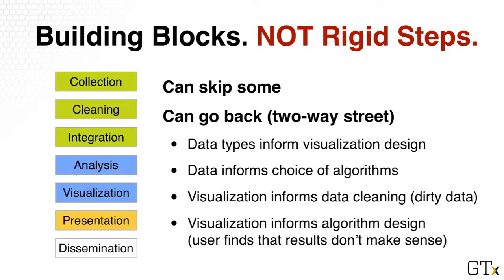You can think of these building blocks as two-way streets. For example, after you've collected data and looked at the data type — let's say time series or graph data — you may want to design your visualization differently. So one of the blue blocks there can be approached in different ways. Similarly, having collected the data, you may start to think about using a particular graph algorithm or an algorithm for time series. So that's another blue block: analytics.